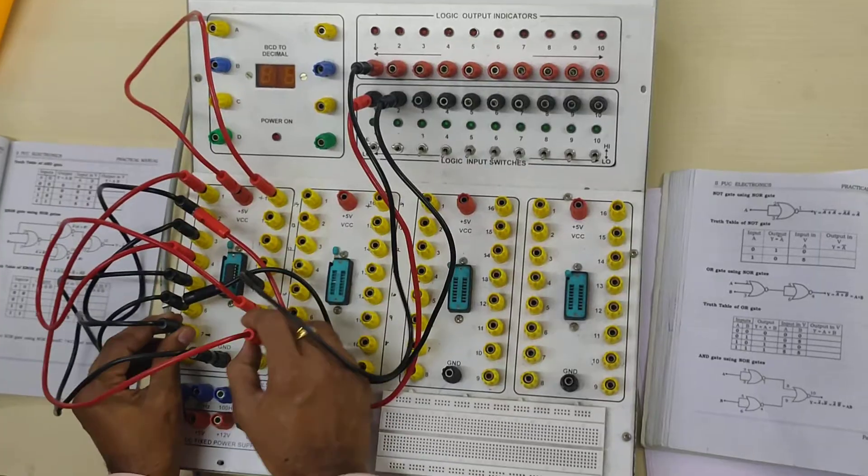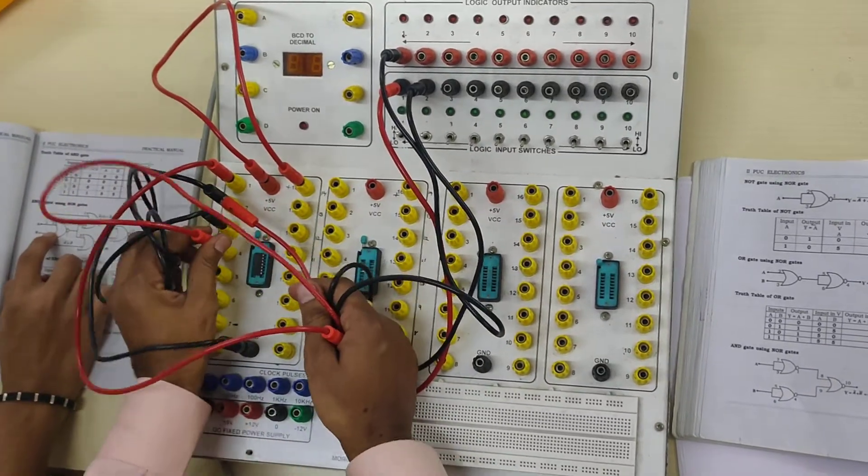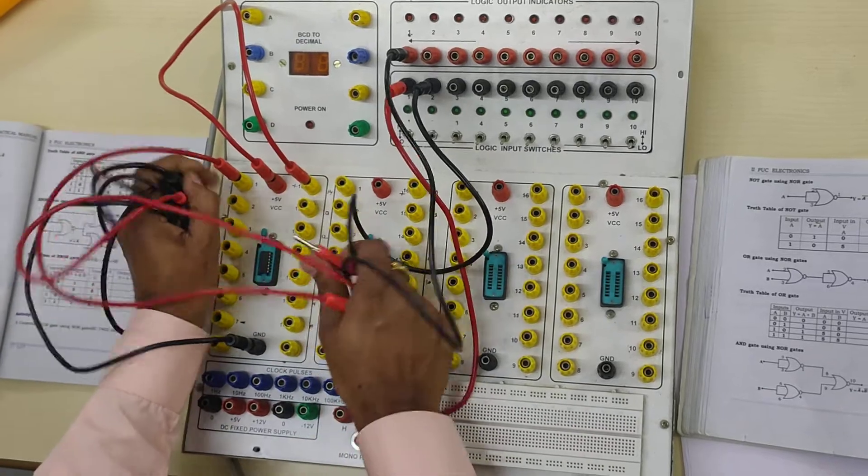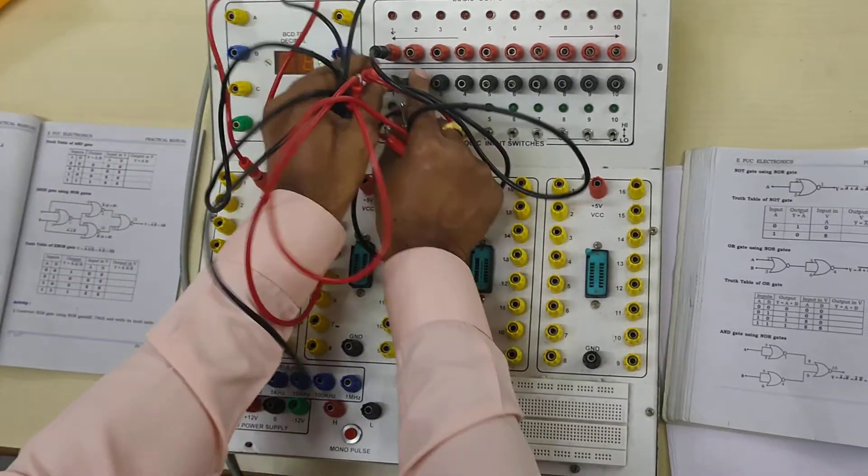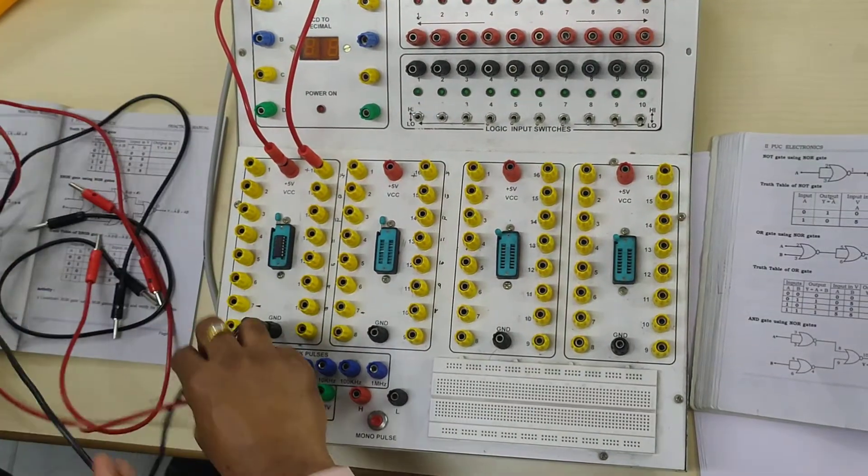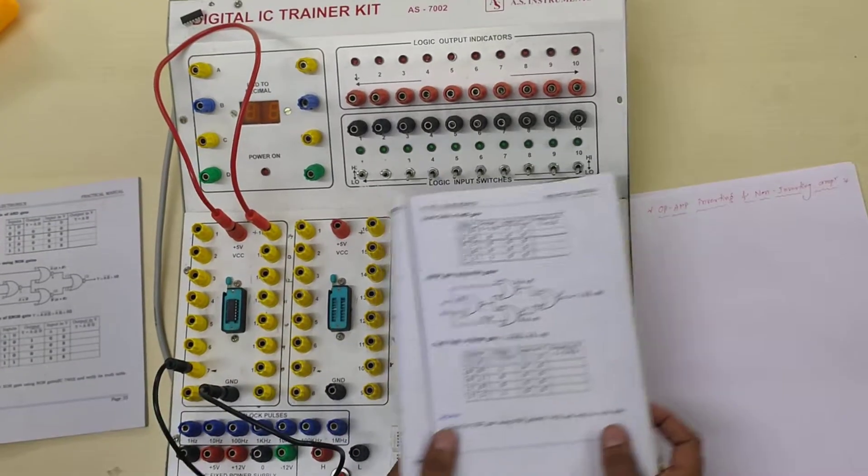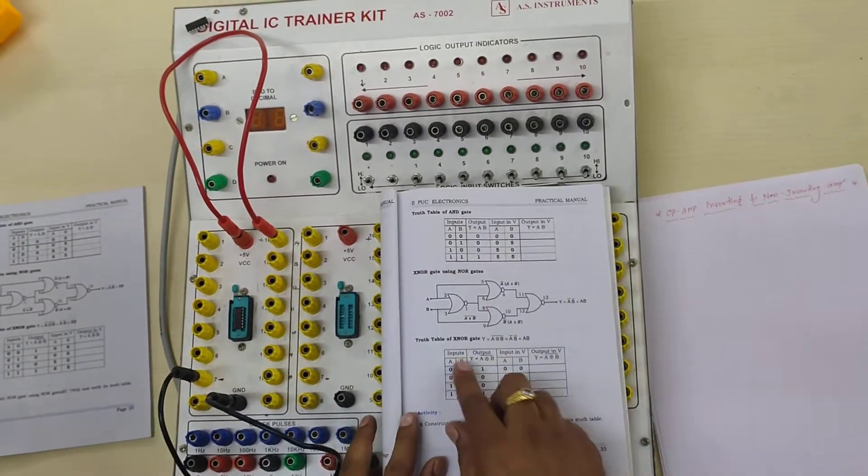XNOR. XNOR gate is required. How many wires are used in this gate? 9. There are how many gates? Totally 11. How many gates? It is 11. Okay. Now, you take circuit diagram. Here is the circuit diagram.